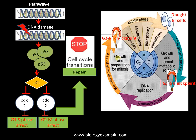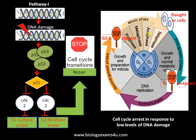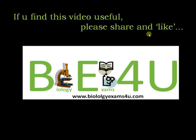The role of p53 is to prevent the progression of the cell at both the G1/S and G2/M checkpoints whenever there is DNA damage, thereby preventing the replication of a cell with damaged DNA. This pathway is triggered in response to lower levels of DNA damage. If you find this video useful, please share and like. Thanks for watching biology exams for you.com.